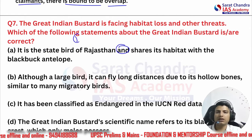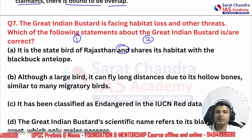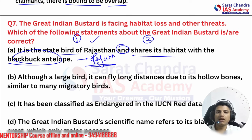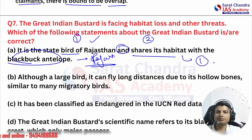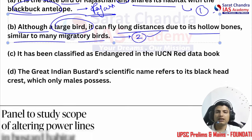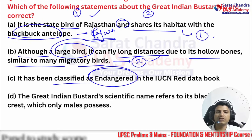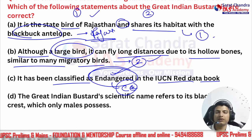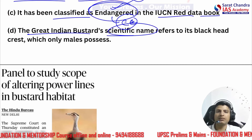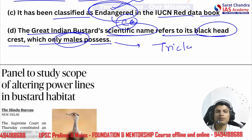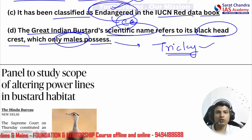Statement one: it is the state bird of Rajasthan and shares its habitat with the blackbuck antelope — there are two parts, both connected by 'and.' Since the blackbuck antelope is found in Rajasthan, this is most likely correct. Statement two: although a large bird, it can fly long distances due to its hollow bones similar to migratory birds — this can be incorrect. Statement three: it has been classified as endangered in the IUCN Red Data Book — this may not be correct as it is critically endangered. Statement four: the GIB's scientific name refers to its black head and crest, which only the male possesses — a tricky statement.